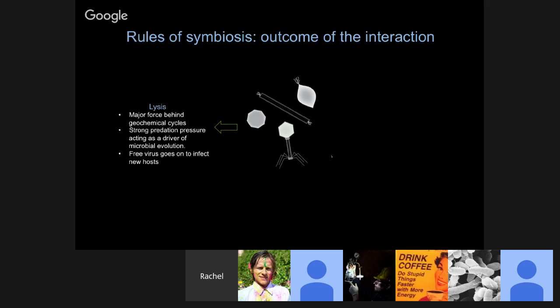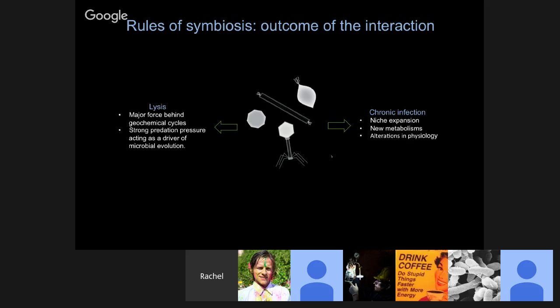There's a range of symbiosis from pathogen to mutualist. We know a lot about the pathogen side — we think of viruses and phage as predators or killers in a population. When they infect a host cell, they lyse that cell and go on to infect new cells. But we know from looking at genomes that there's another outcome: chronic infection. There are many examples now arising of how chronic infection can shape the physiology of the host cell, either as a chronic infection being shed over time or as a latent infection where the virus is not being produced.